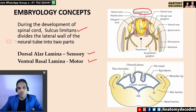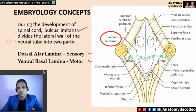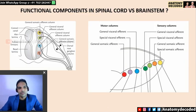The basal lamina is motor, which will have motor nuclei, and the alar lamina is sensory, which will have sensory nuclei. This is in the region of the spinal cord. When we look at the region of the brain stem, the neural tube opens up such that the alar lamina is deviated to the lateral aspect and the basal lamina is on the medial aspect. The cavity of the fourth ventricle is visible, and the sulcus limitans divides motor nuclei medially from sensory nuclei laterally. This basic knowledge is important before studying the functional components.